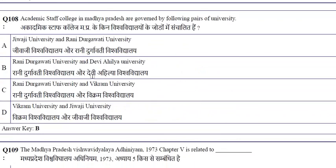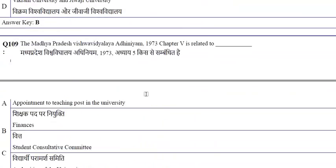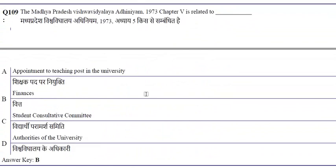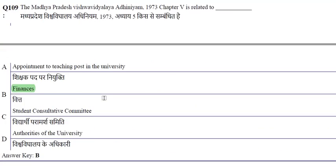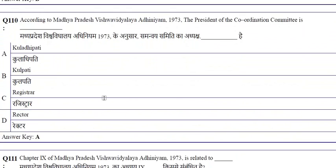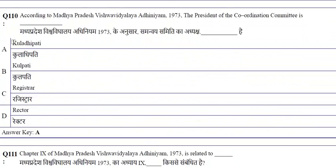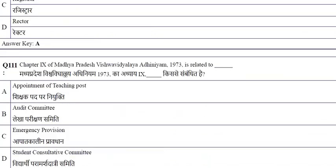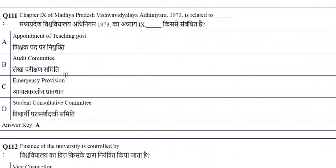Academic staff colleges in Madhya Pradesh are governed by Rani Durgavati University and Devi Ahilya University. The MP Vishwavidyalaya Adhiniyam 1973, Chapter 5 is related to finances. Chapter 9 is related to appointment of teaching posts. According to the Act, the President of the Coordination Committee is the Kuladipati.